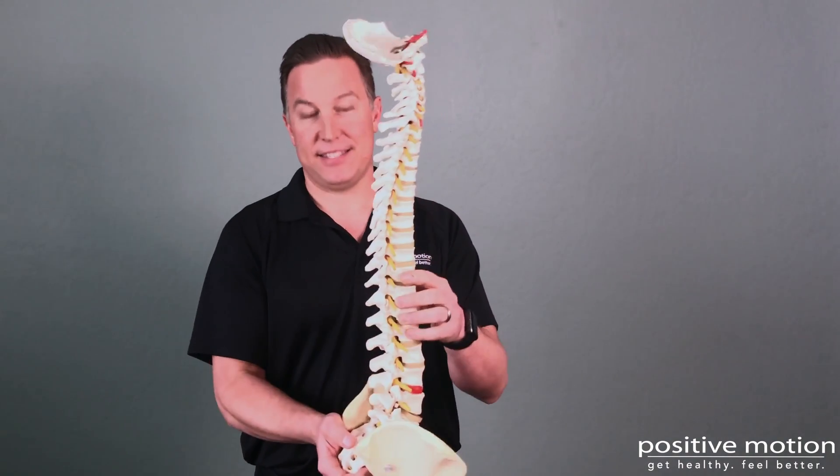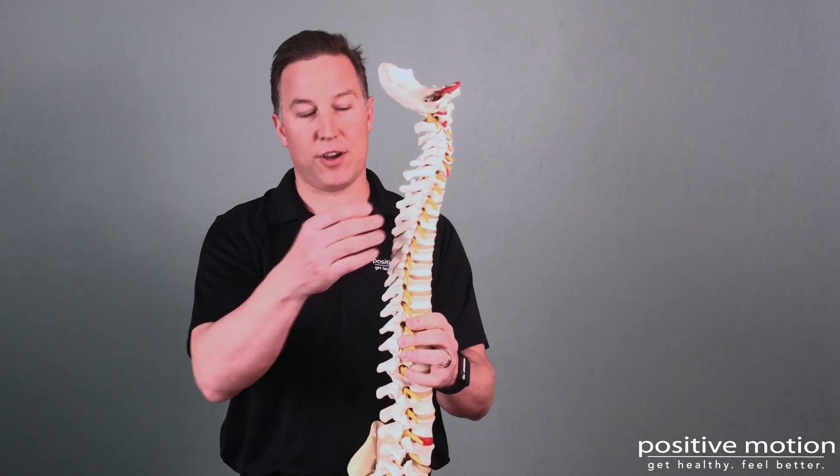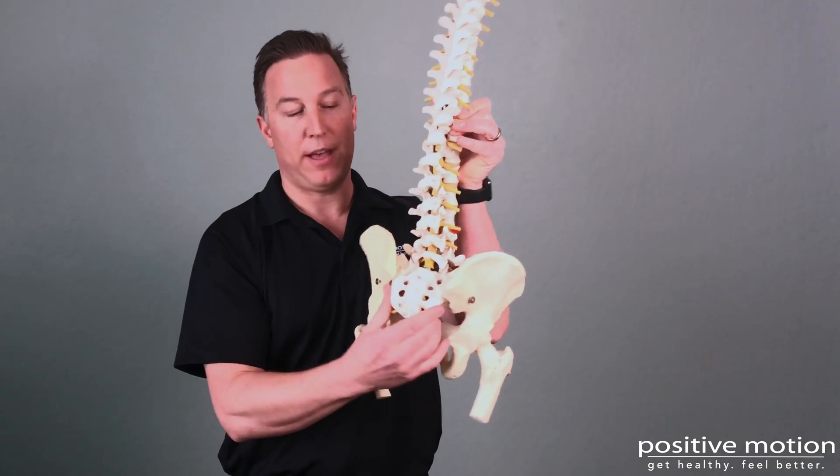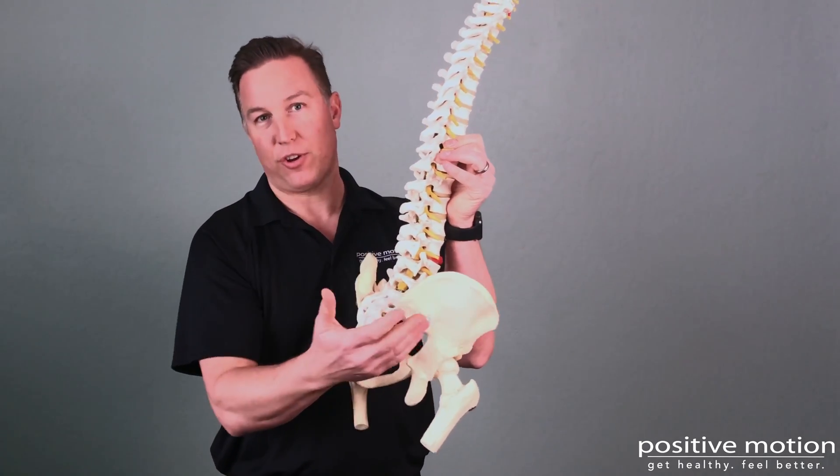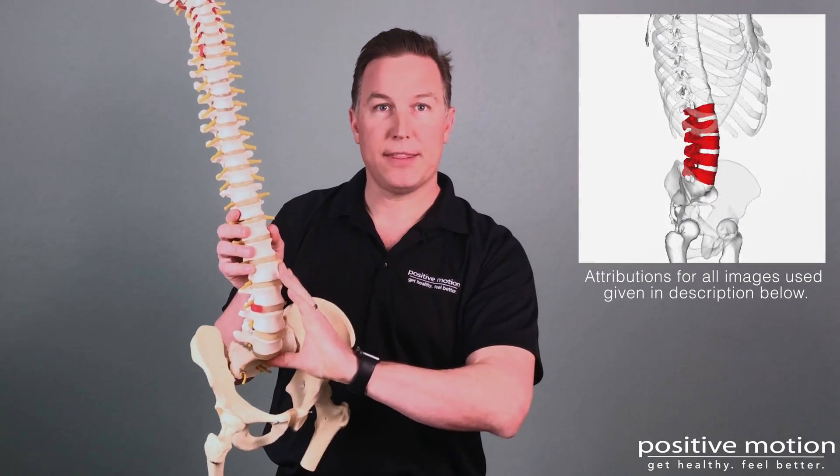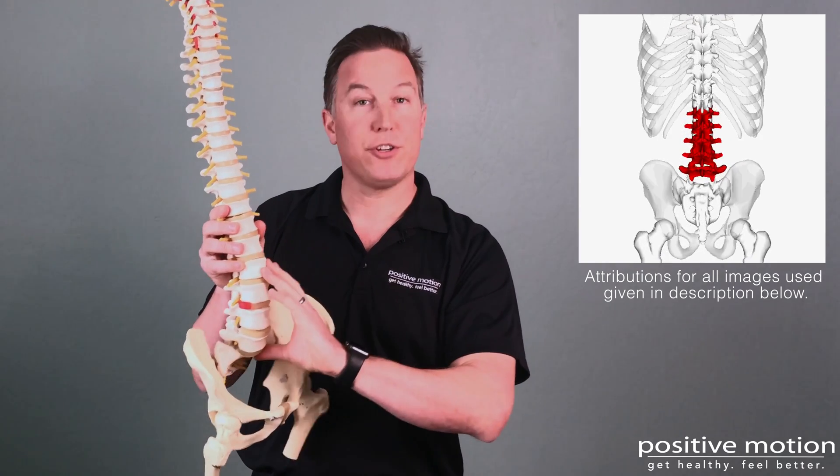What I'd like to share with you right now is how the spine in your lower back is meant to work and what causes the majority of disc problems and low back pain. This is the spine. Up here is the base of the skull. These are your vertebrae. You have 24 of them. And here is your pelvis, sacrum. These are called your ilium. Spine is divided into the cervical, thoracic, and lumbar spine. The bottom five vertebrae are your lumbar spine.